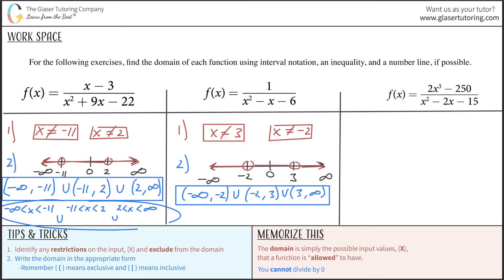We can also write the inequality: negative infinity less than x less than negative 2, or negative 2 less than x less than 3, or 3 less than x less than infinity. That would be the inequality for this problem.